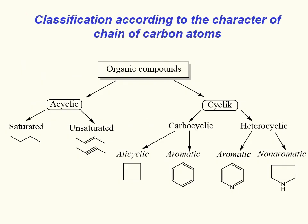According to the first classification, organic compounds are divided into acyclic and cyclic. Saturated acyclic compounds contain only single bonds. Unsaturated acyclic compounds contain double and triple bonds.